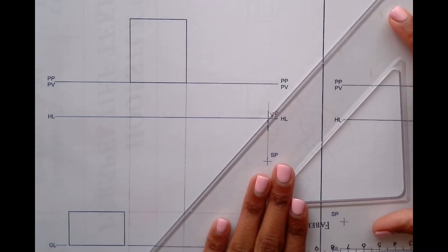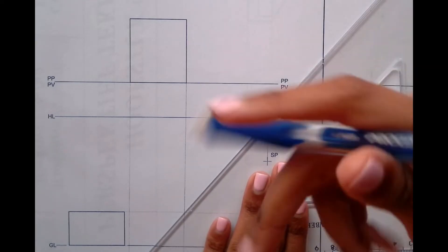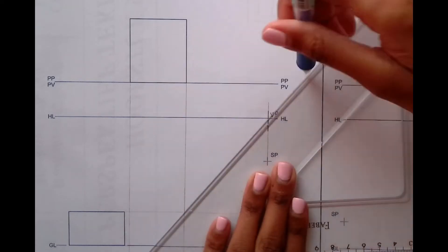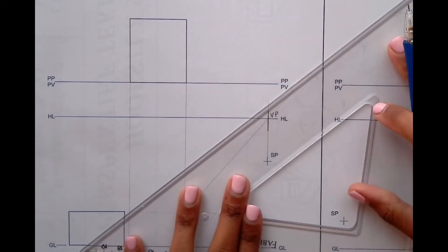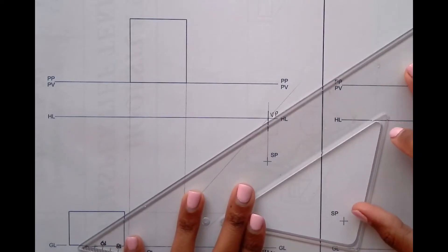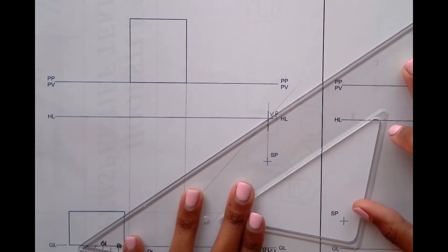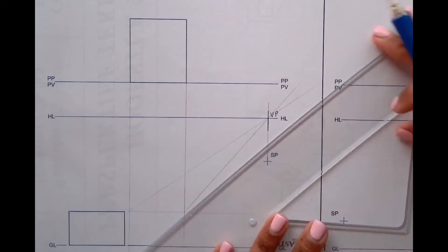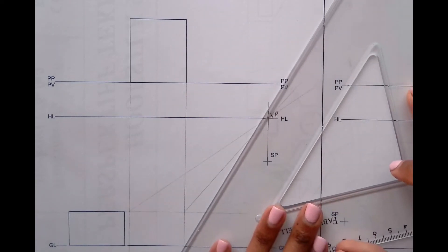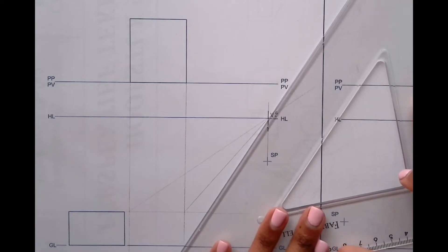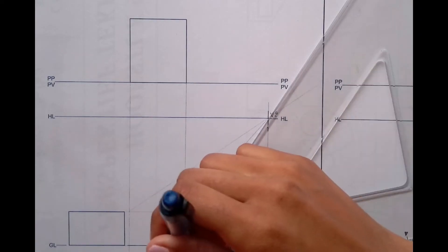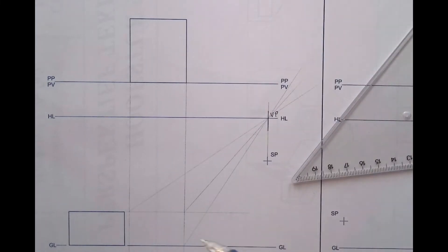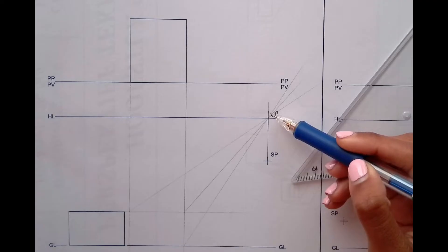All lines or all points that you take across need to be taken to the vanishing point. So I have one, another point there, then like that. All points have been transferred to the vanishing point.